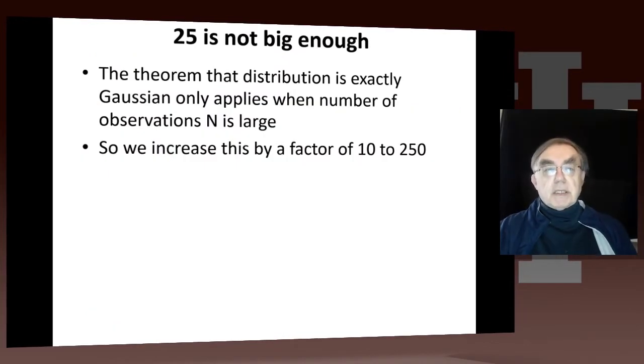So we've so far studied what happens when you have a mean of 25, and with the error, which is almost exactly, but not quite precisely, the square root of 25 or 5, but as we saw from looking at the details of the distribution, it is not exactly Gaussian. It's too small on the low side and too big on the high side. And so, the theorem that the distribution is exactly Gaussian is a so-called asymptotic theorem. It only applies when the number of observations N is large. And 25 is big enough for it to be roughly right, but not big enough for it to be precisely right.